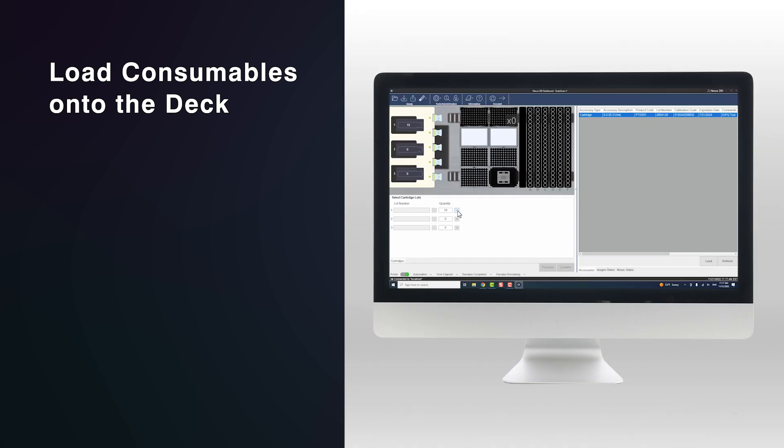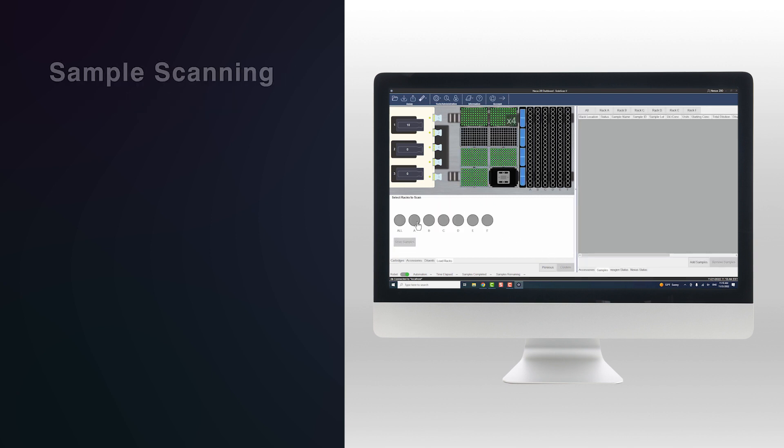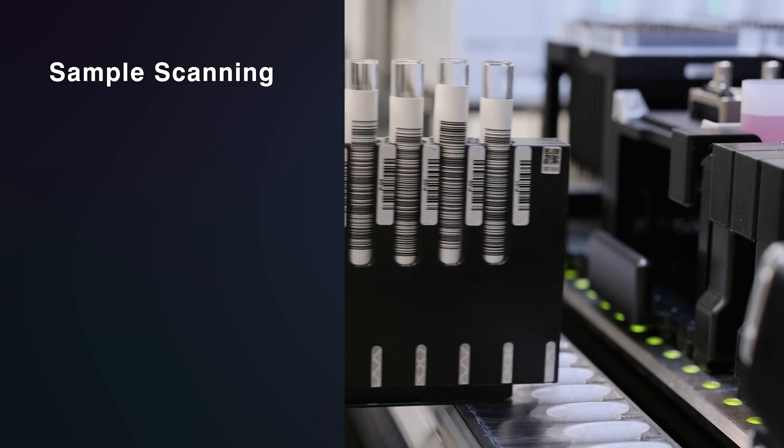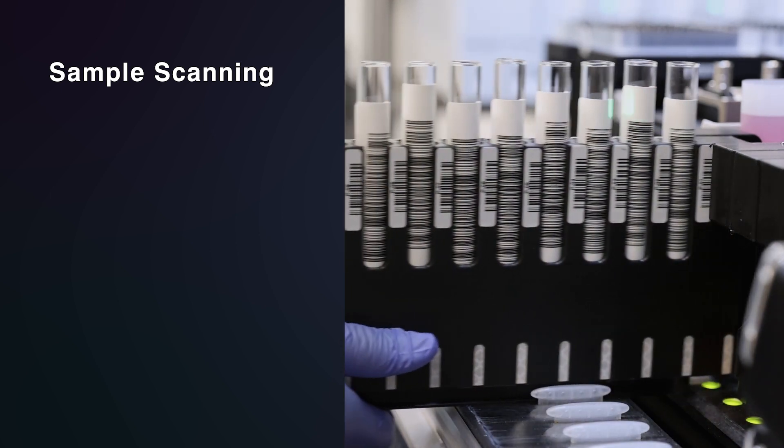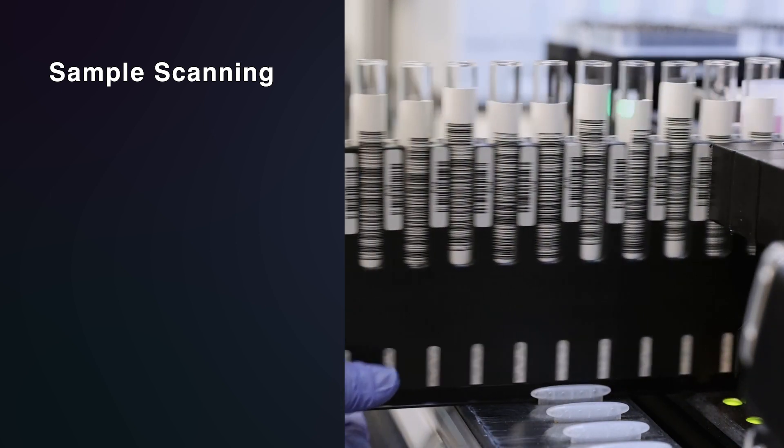Confirm the cartridge and accessory lot numbers and enter them into the user interface. Next, prepare for sample tubes to be scanned. When the run is ready, select in the software which sample racks are to be populated. Then the samples can be scanned. The on-screen prompts provide instructions for loading the racks onto the deck.